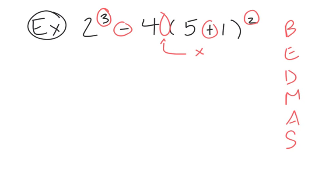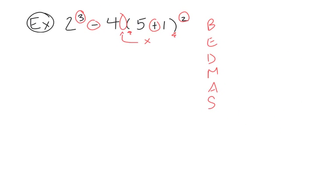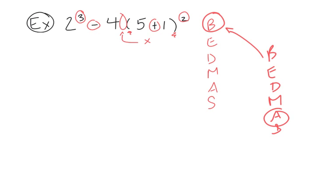B stands for brackets, so let's do whatever is in the brackets first. When you look within the brackets, you do BEDMAS again. Inside we only have addition, so we add 5 plus 1 to get 6. Everything else stays the same unless we manipulate it — that's very important.